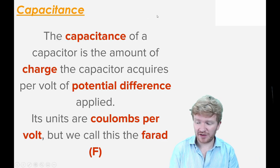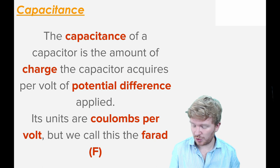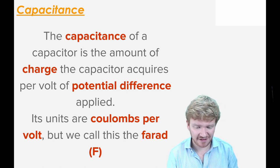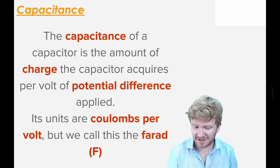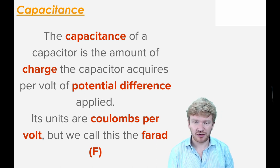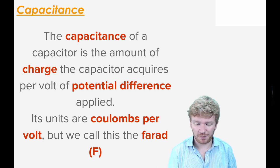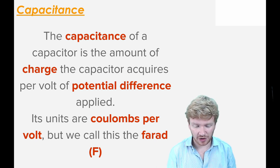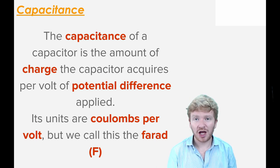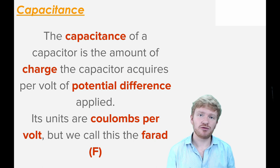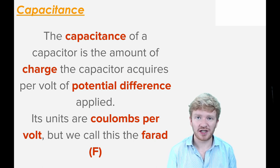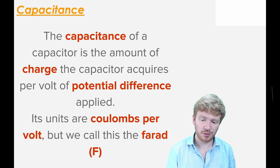We always need some equations, and the key one to know here is the idea of capacitance. The capacitance of a capacitor is the amount of charge that the capacitor requires per volt of potential difference applied. Its units are coulombs per volt, and we give that the derived unit of the farad.